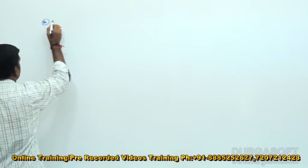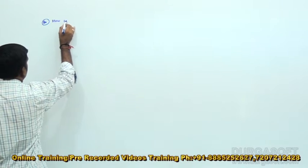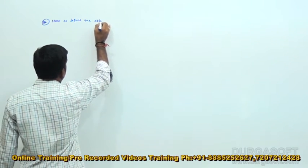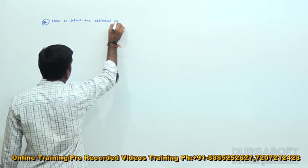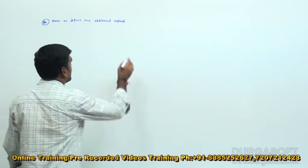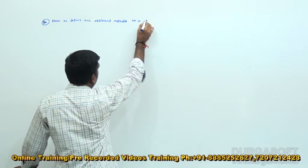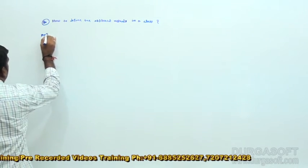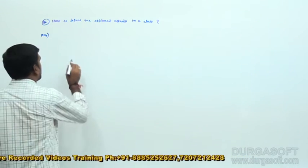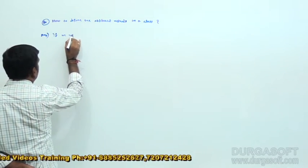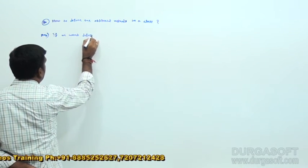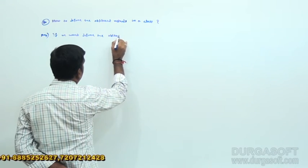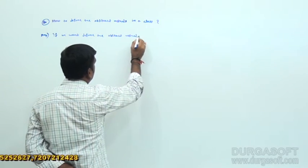How to define the abstract methods in a class? Abstract methods inside the class.